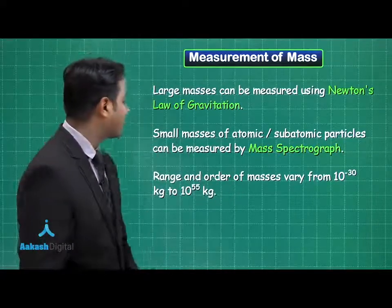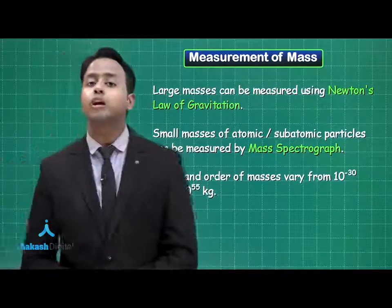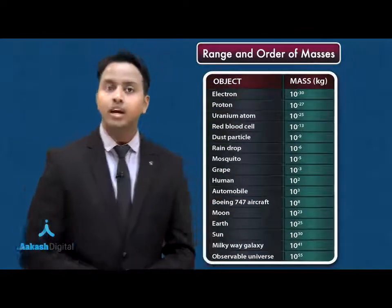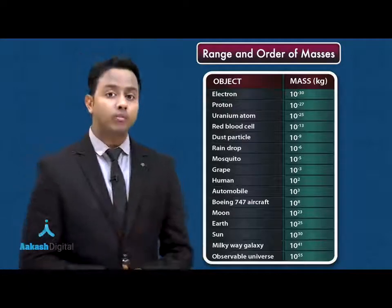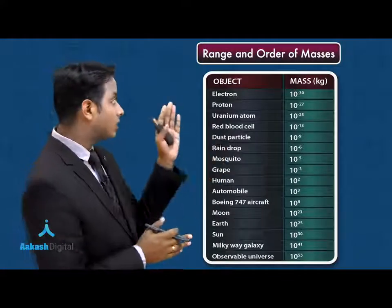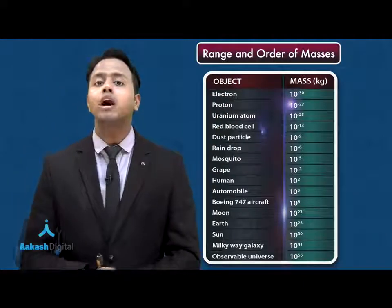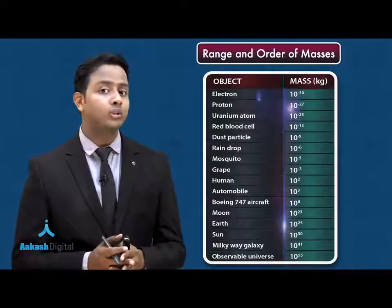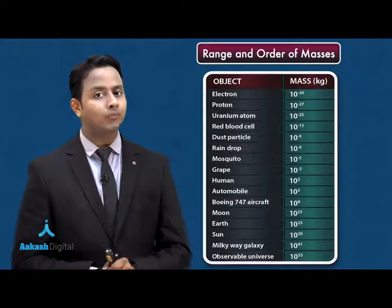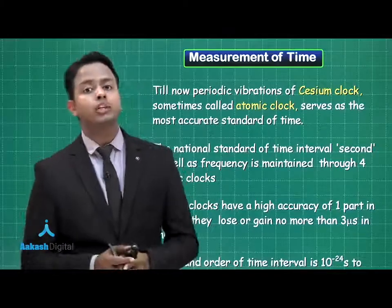The range and order of masses in the universe varies from 10 to the power minus 30 kilograms up to 10 to the power 55 kilograms. The smallest is the electron at approximately 9.11 × 10 to the power minus 31 kilograms, and the largest is the total cumulative mass of the observable universe at around 10 to the power 55 kilograms. These values have been summarized in a table.